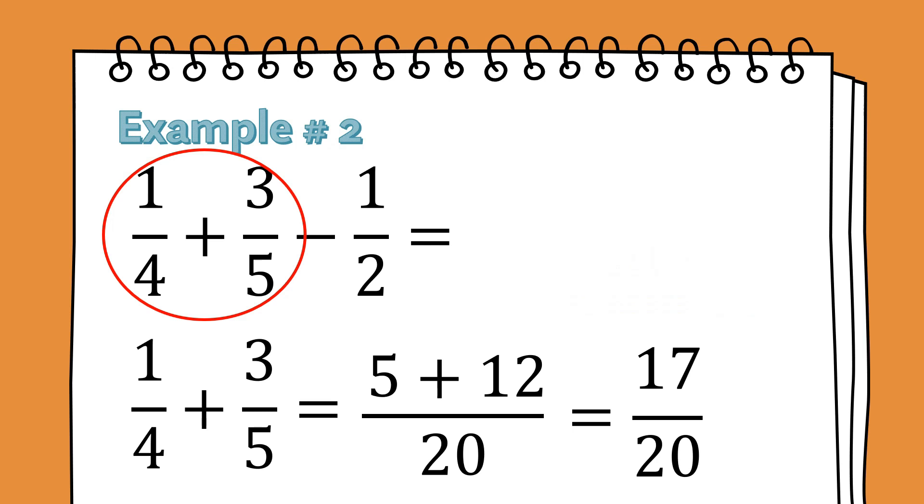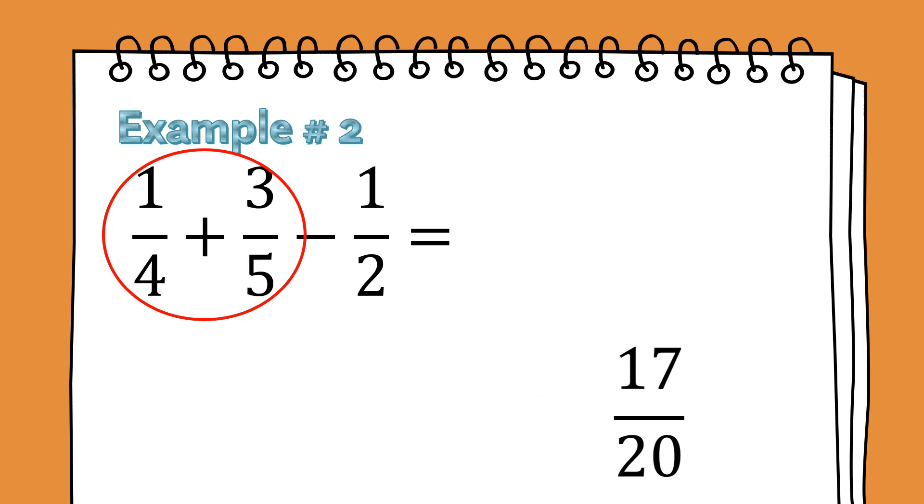This pair will be 17 over 20. We are not yet done since we have to subtract this by one half. After the first pair, let us now proceed subtracting 17 over 20 with one half.